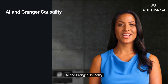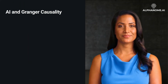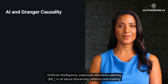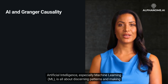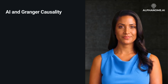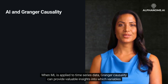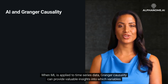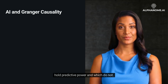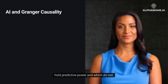AI and Granger Causality: Artificial intelligence, especially machine learning (ML), is all about discerning patterns and making predictions. When ML is applied to time series data, Granger Causality can provide valuable insights into which variables hold predictive power and which do not.